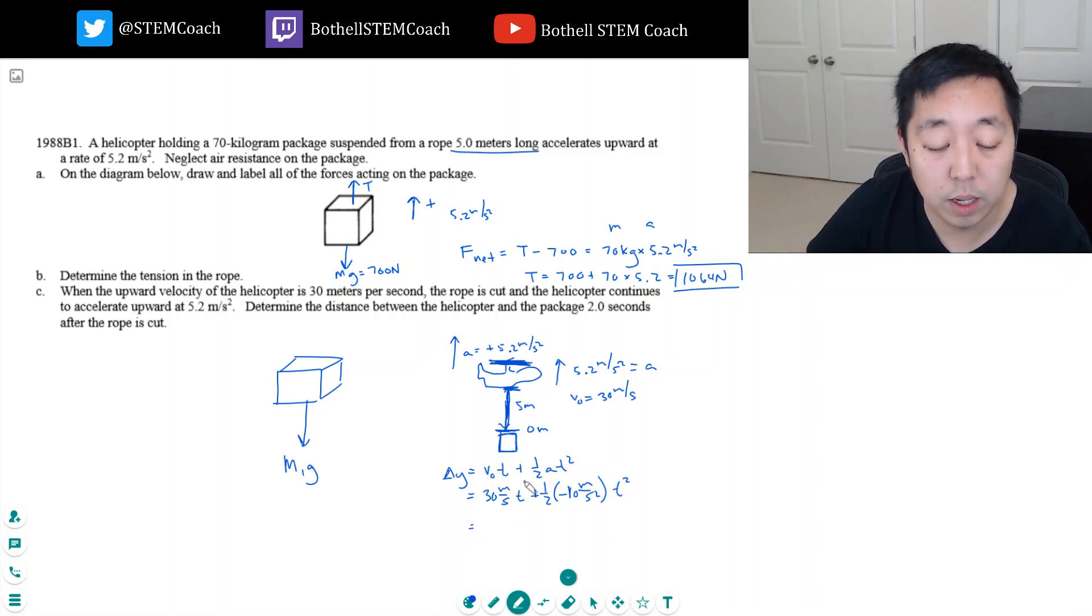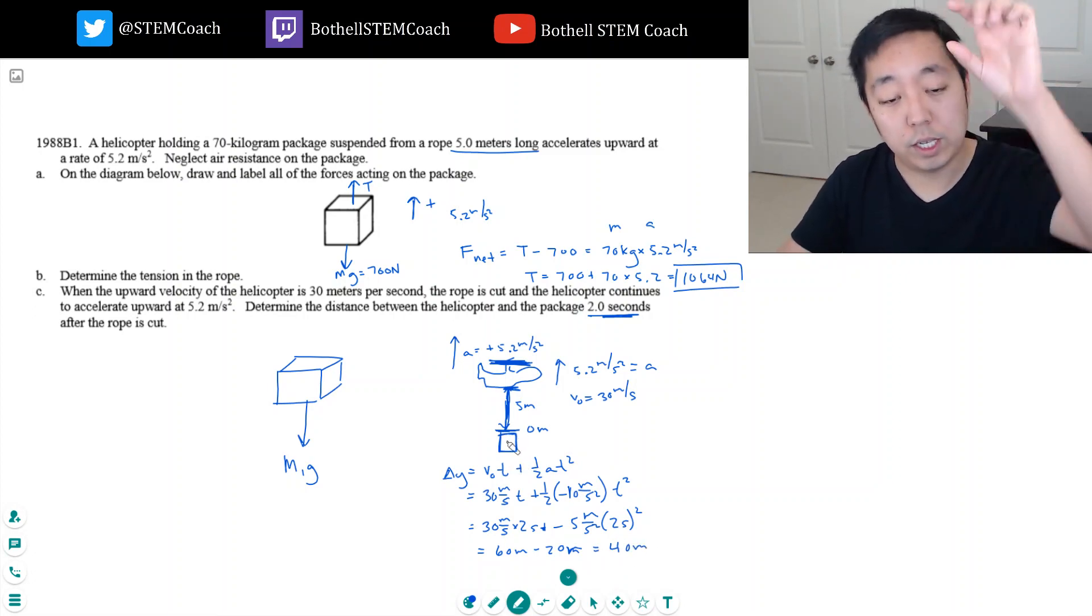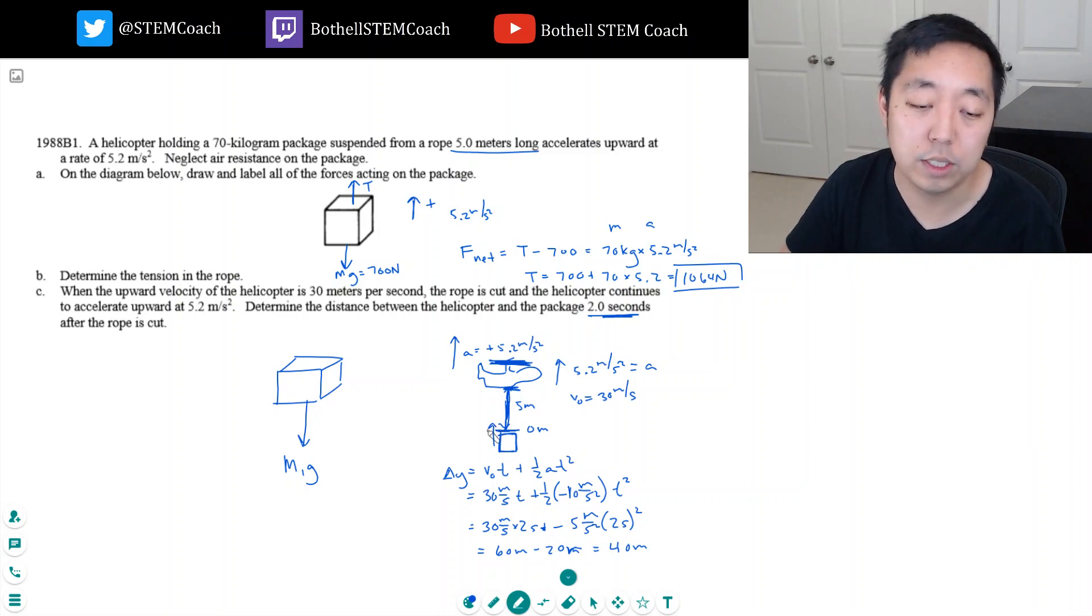After two seconds, I plug in t equals 2. That's 30 times 2, minus 5 meters per second squared times two seconds squared. So this is 60 meters minus 4 times 5, which is 20 meters, so that's 40 meters. He's going to arc up about 40 meters after two seconds because he's still going upward. This guy's going to move up 40 meters.